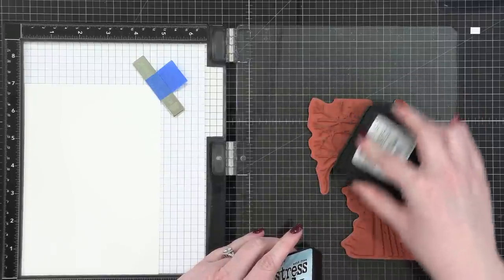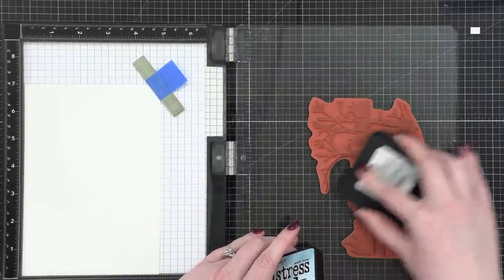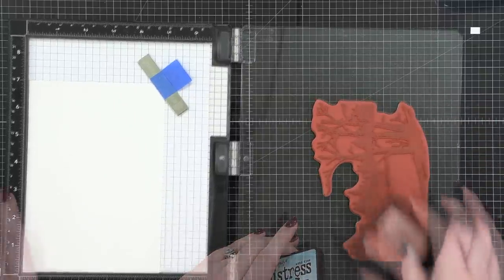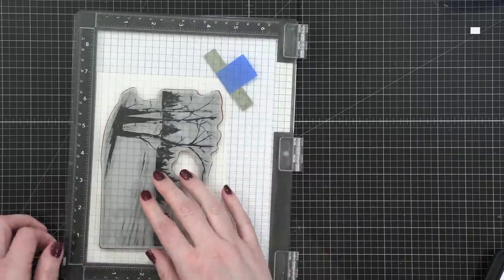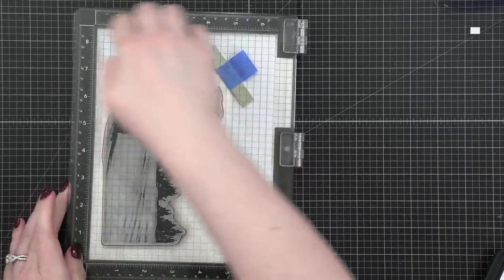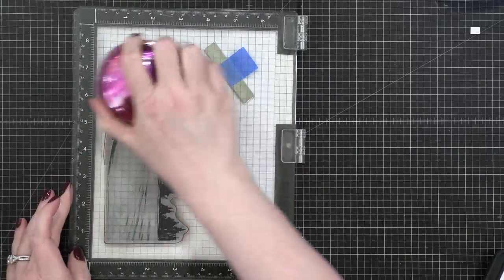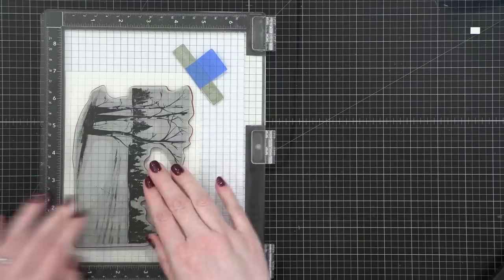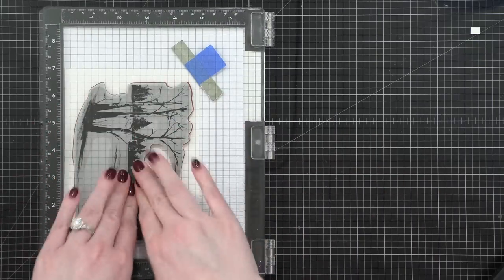So I'm using some Fabriano Artistico extra white watercolor paper. And I'm actually going to end up stamping this image twice, because the first time I stamped it, it was very pale. It was a little bit hard to see where all the different areas and shapes were. So I inked up my stamp a second time and then stamped down right onto that watercolor paper.